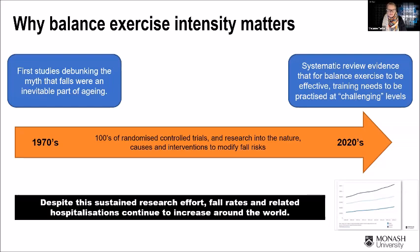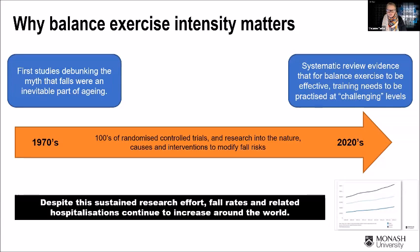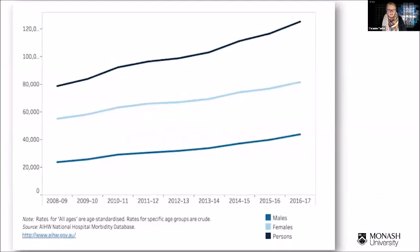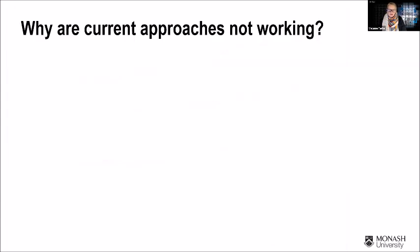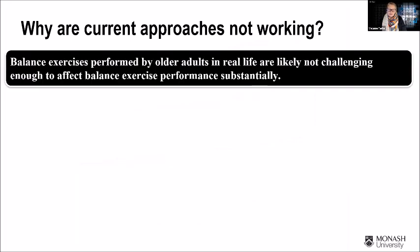However, despite this sustained research effort, falls rates and related hospitalisations continue to increase worldwide. In Australia, for example, the age-adjusted hospitalisation rates for falls have been increasing for the last 15 years by about two to three percent. So it is a problem that even though we've known about it for a long time, we know that our current approaches aren't working. I want to talk about why we think those current approaches may not be working.